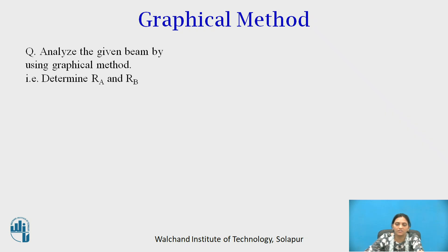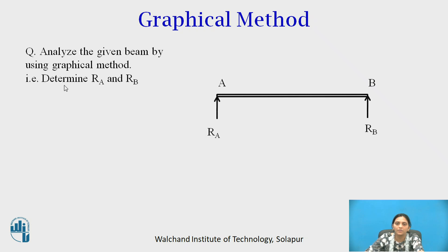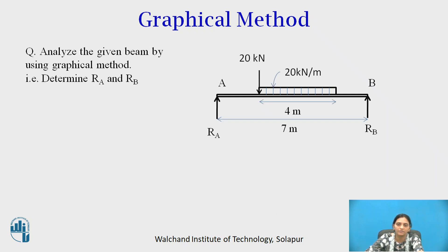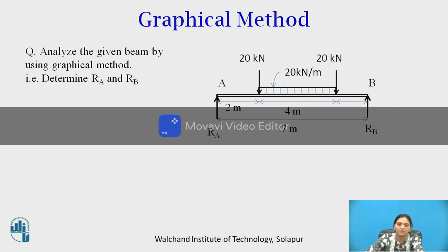Let us consider a numerical for explanation. The beam AB is simply supported with a span of 7 meters, having a UDL of intensity 20 kN per meter up to a span of 4 meters. One point load of 20 kN is acting at 2 meters from point A, and one point load of 20 kN is acting at 1 meter from point B. Analyze the given beam by graphical method, meaning determine RA and RB graphically.